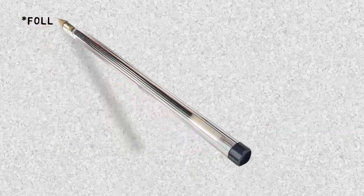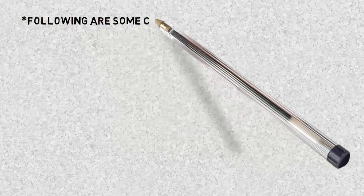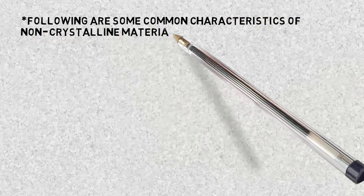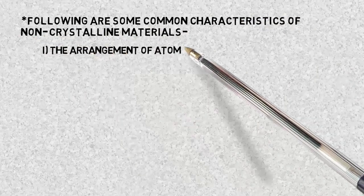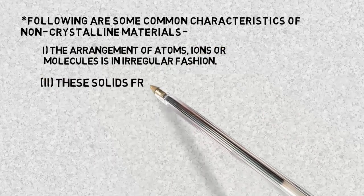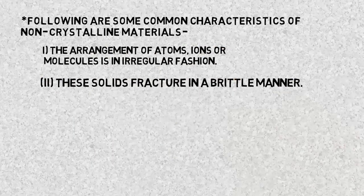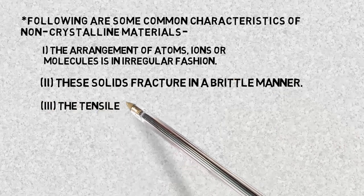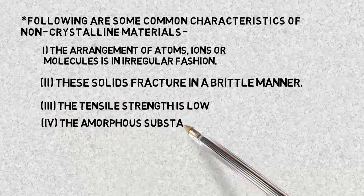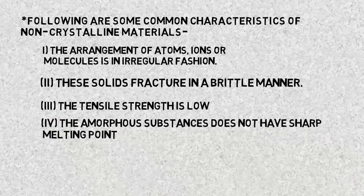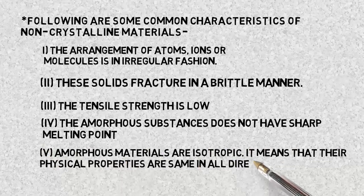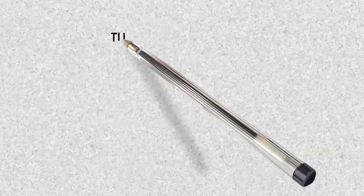Now here are some properties of non-crystalline materials. First, their atoms and molecules are arranged in irregular pattern. Second, fracture takes place in brittle manner. Third, their tensile strength is low. Fourth, they don't have sharp melting point. And fifth, they are isotropic in nature, meaning they have same physical properties in all directions.